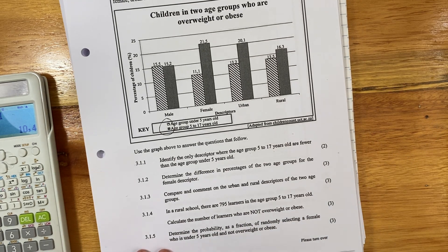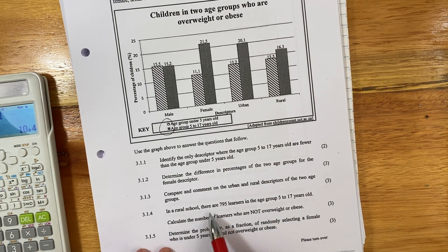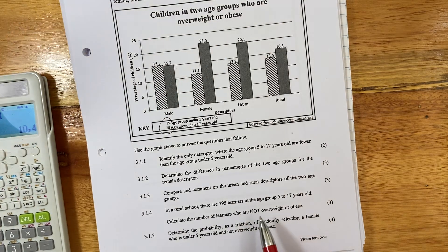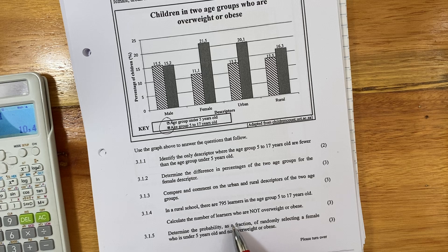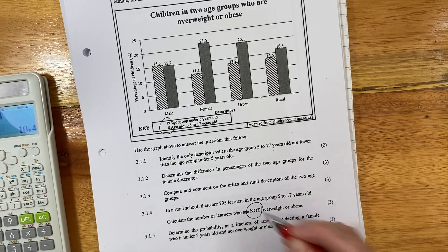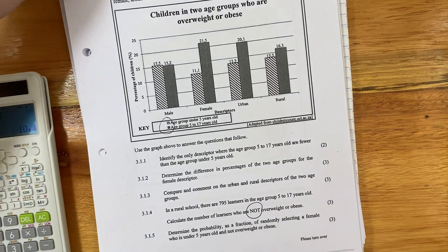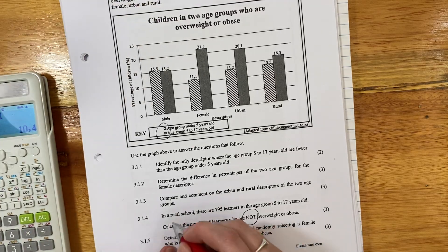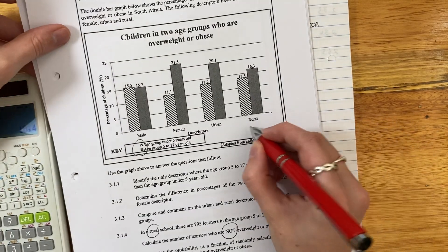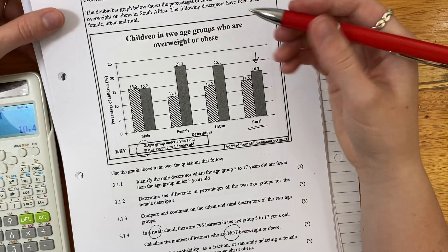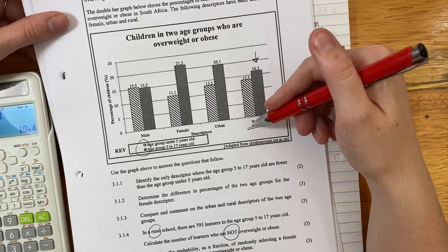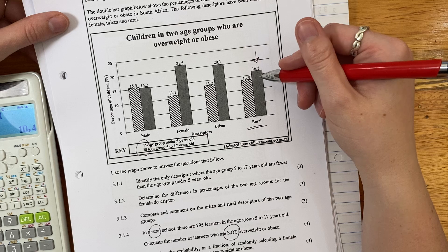3.1.4. So in a rural school there are 795 learners in the age group 5 to 17 years old. Calculate the number of learners who are not overweight or obese. So what does it say? A rural school. So we're going to be looking over here. We're going to specifically be looking over here because it's 5 to 17, so we don't really care about the under 5-year-olds.